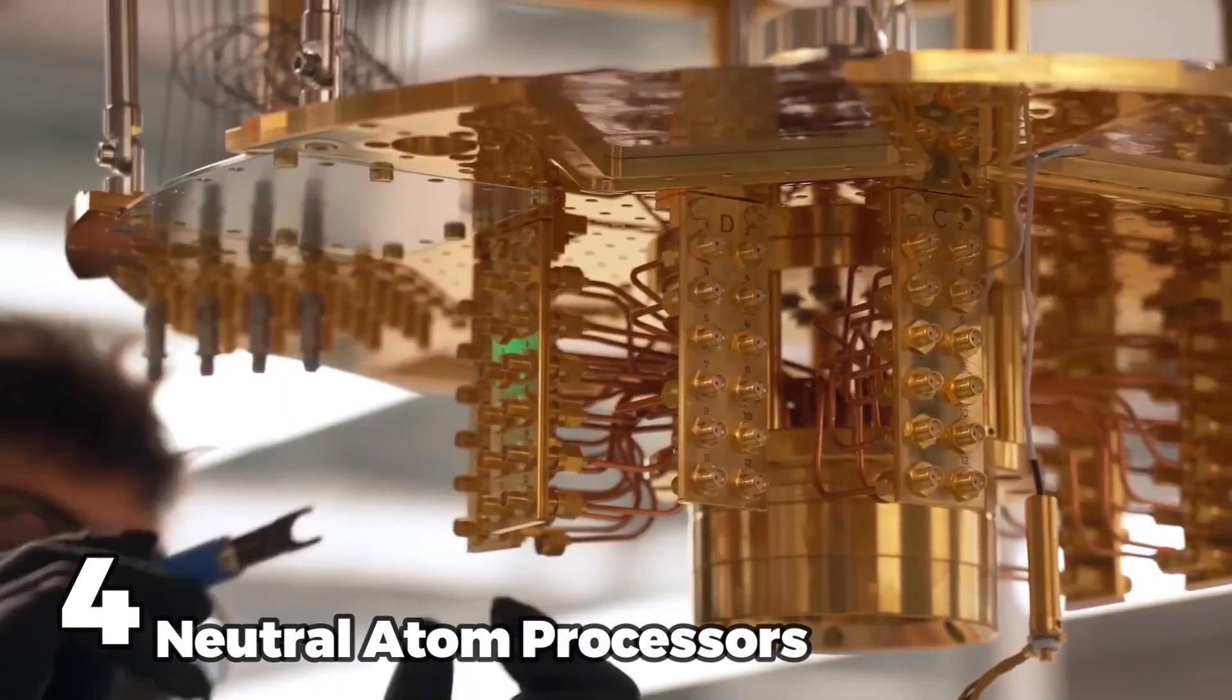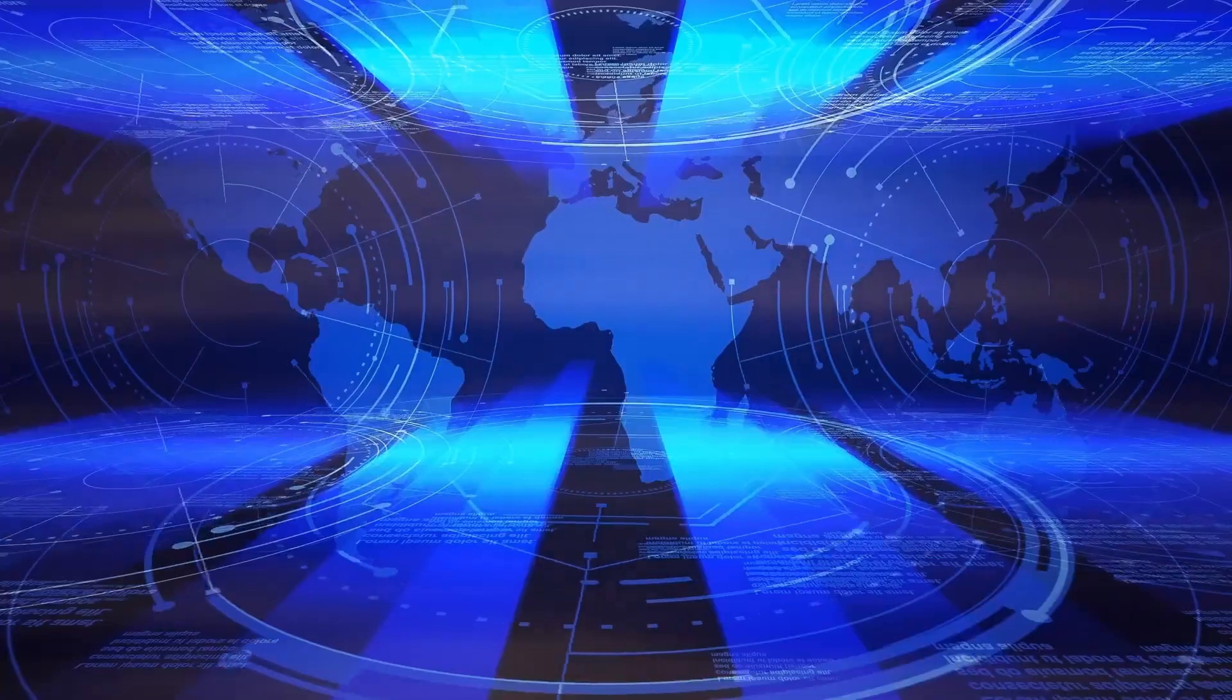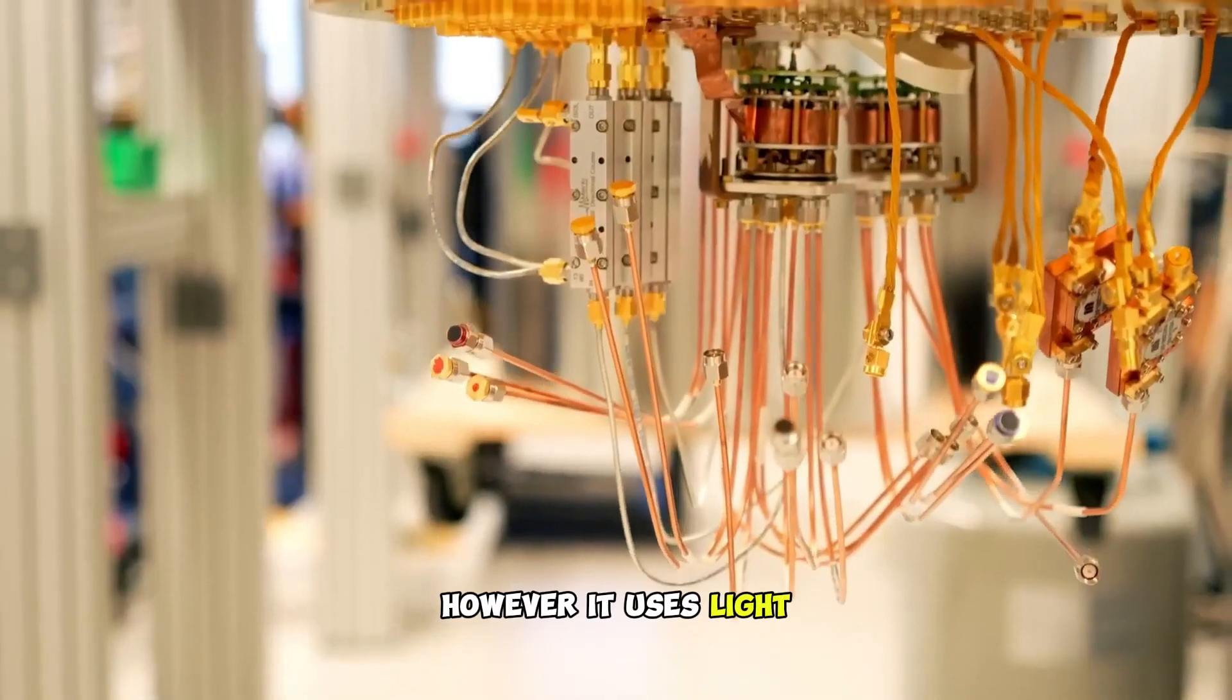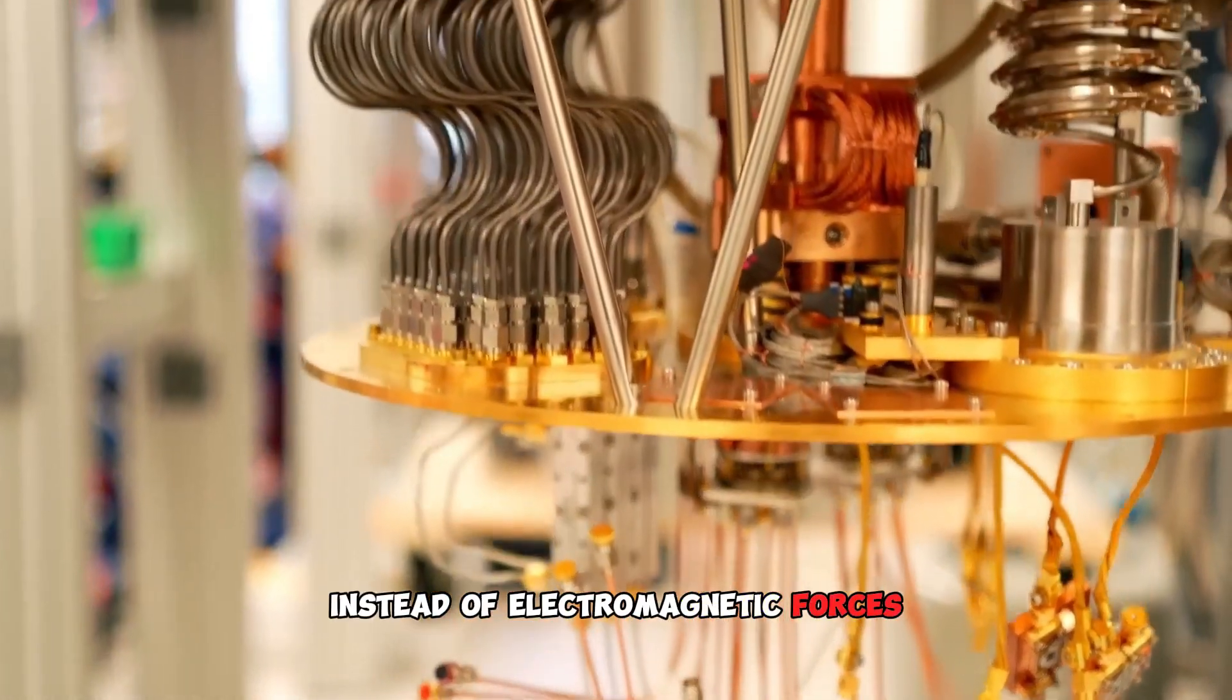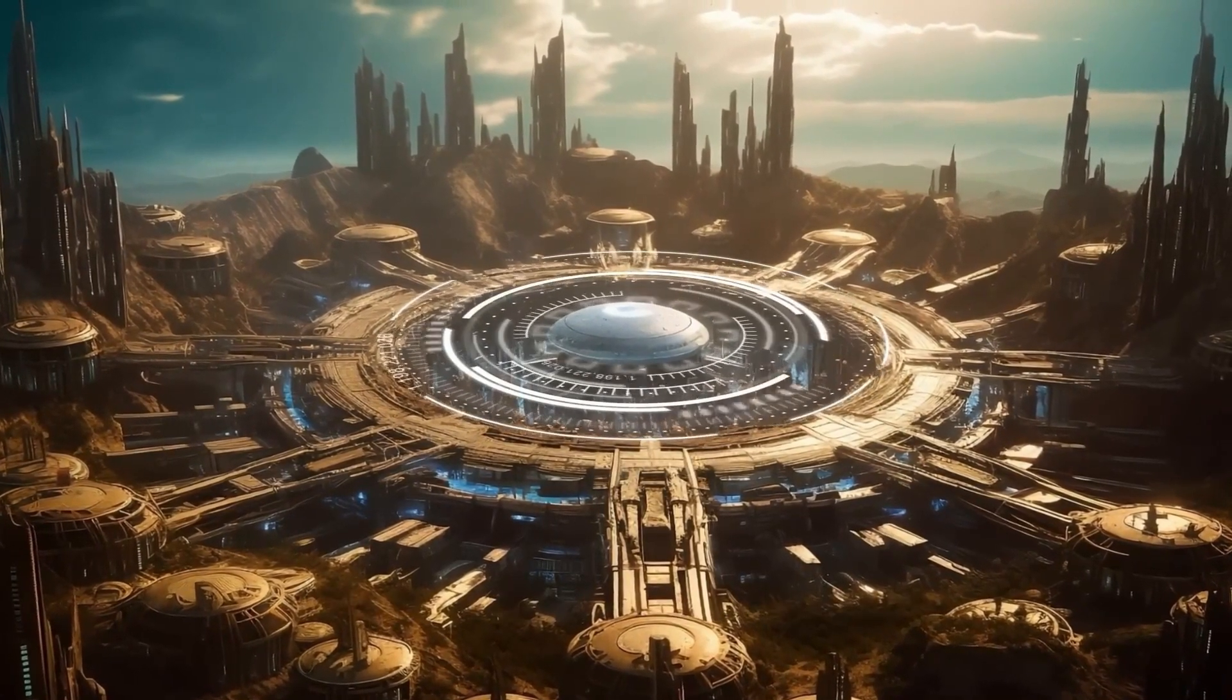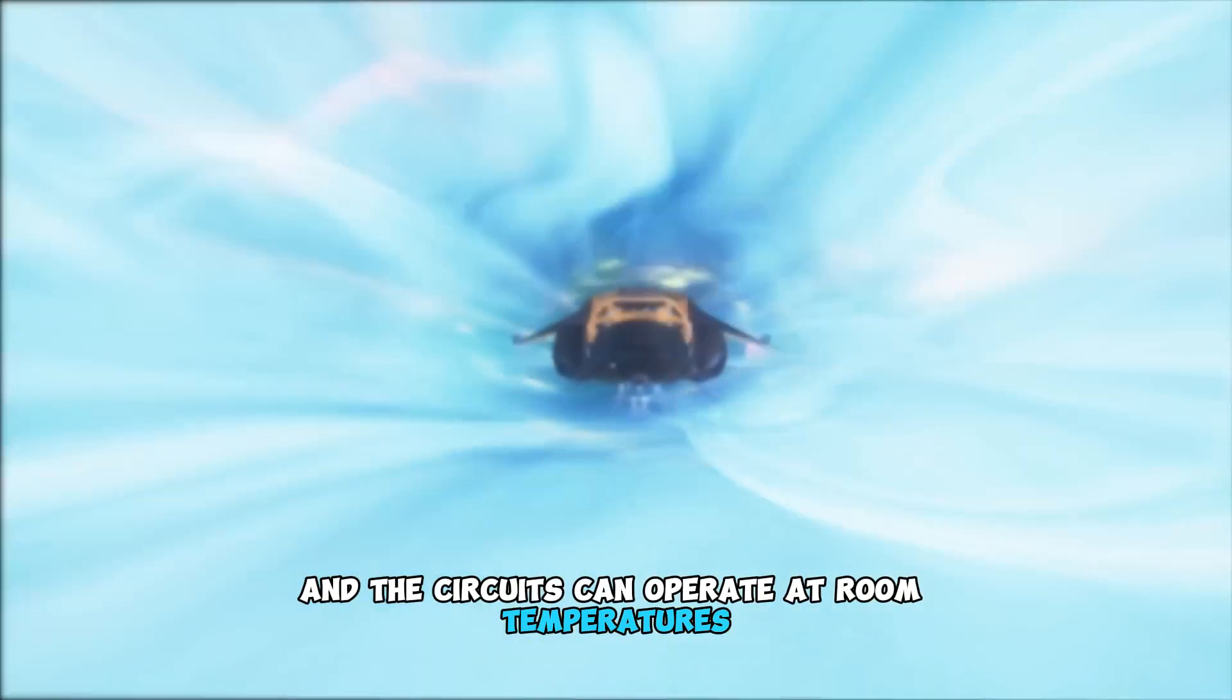Neutral atom processors. Neutral atom qubit technology is similar to trapped ion technology. However, it uses light instead of electromagnetic forces to trap the qubit and hold it in position. The atoms are not charged, and the circuits can operate at room temperatures.